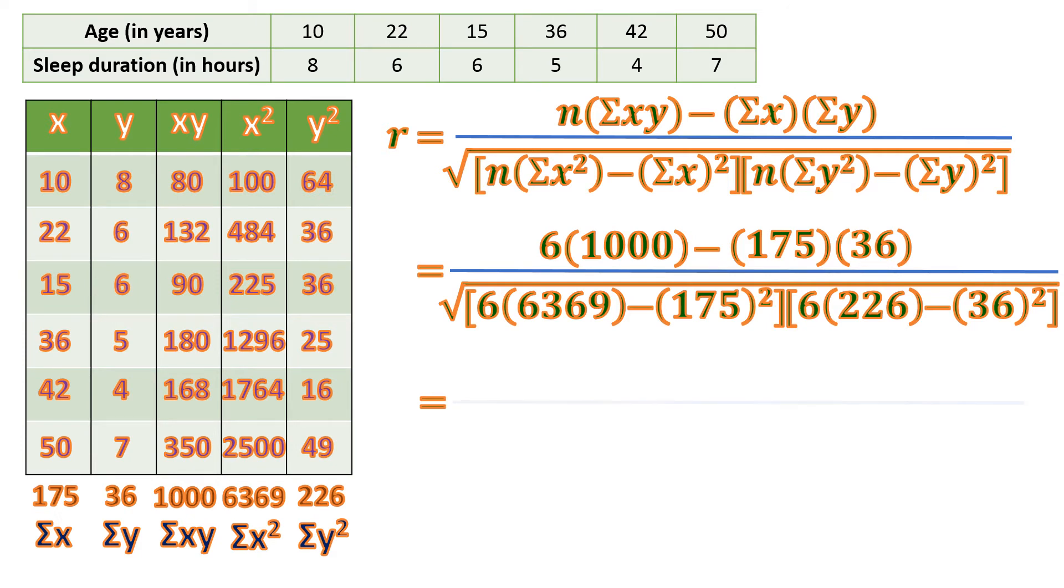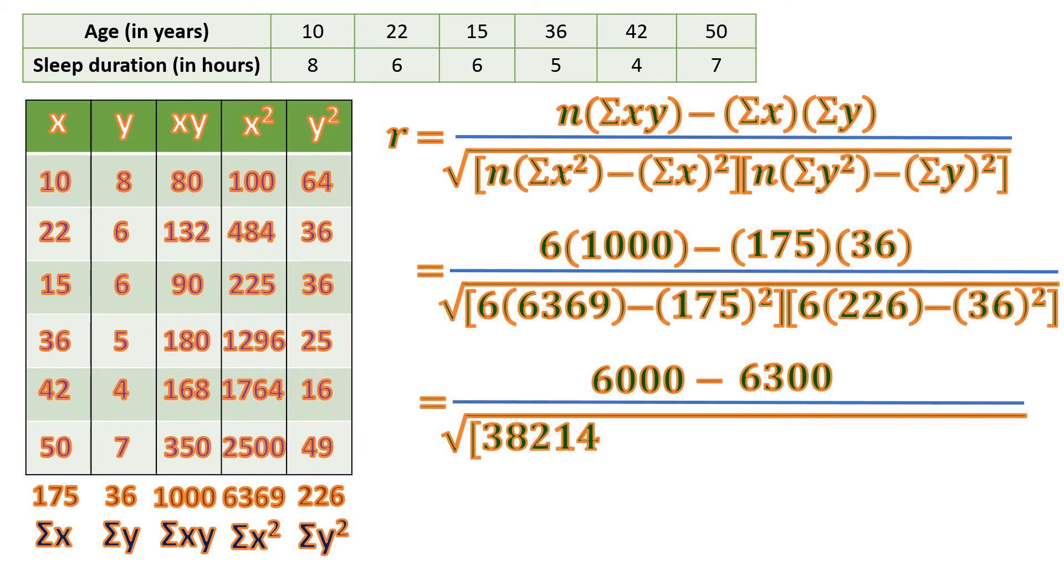So equals, we're going to multiply. 6 times 1000 is 6000 minus 175 times 36, which is 6300, all over the square root of 6 times 6369 equals 38214 minus square of 175 which is 30625, times the product of 6 and 226 which is 1356, minus the square of 36 which is 1296.